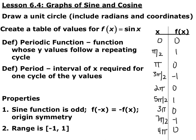And then if we kept going — 5π/2, 3π, 7π/2, 4π — you notice the y-coordinates go 0, 1, 0, negative 1, 0, 1, and continue to repeat in this same pattern. So because we have these repeating y-coordinates, sine functions are what we call periodic — they repeat.